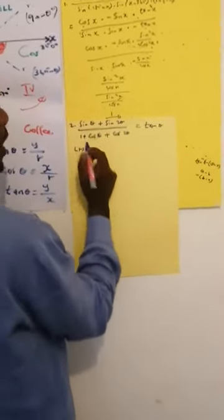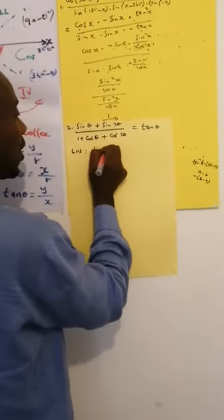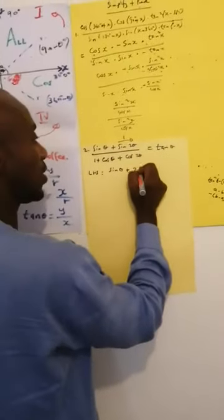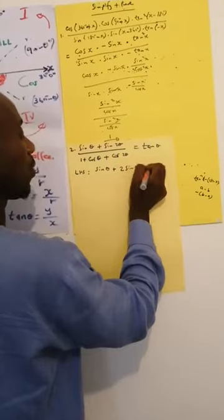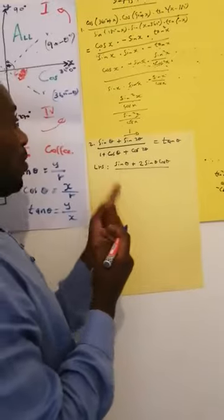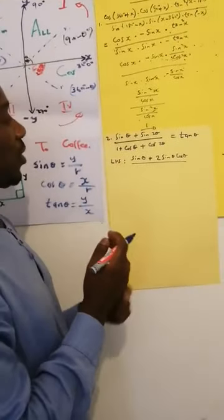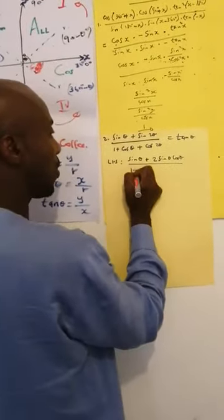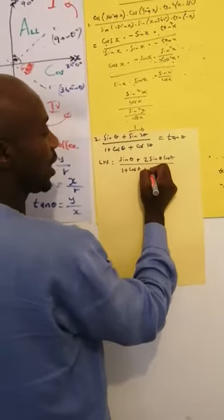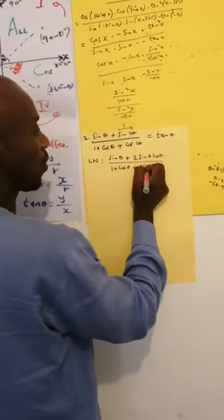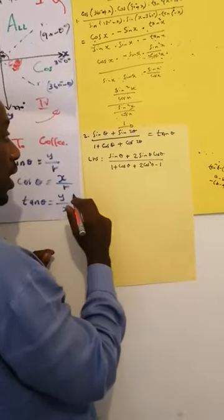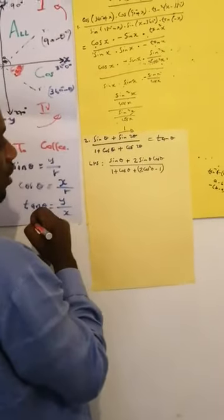So if it's like this, sin θ — we know sin θ is very simple. The problem is sin 2θ. What is sin 2θ? It's 2 sin θ cos θ. This one is for grade 12. And then we say 1 + cos θ. Cos 2θ is like 2cos²θ − 1.